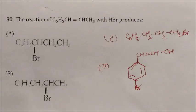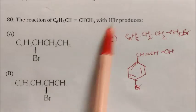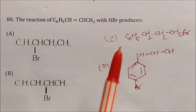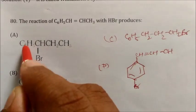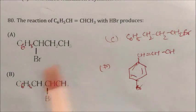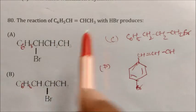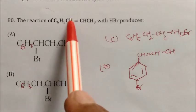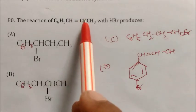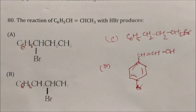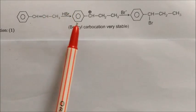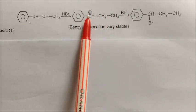Question: The reaction of C6H5−C(=S)−SCH3 with HBr produces what? On reaction with HBr, the pi electron shifts and a benzylic carbocation forms, which is very stable. Br− attacks the benzylic position. We get the corresponding product. Answer: option 1.